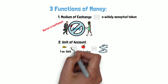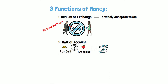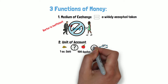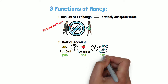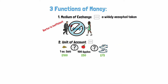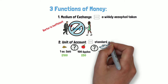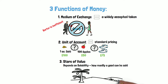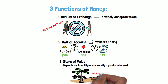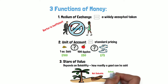If we relied on everyone bartering, one ounce of gold is 100 apples, and 100 apples is two pairs of shoes, and so on and so forth. It's unproductive and inefficient. We need a standard way to price things, so money has to be a unit of account. The third function of money is a store of value. Store of value depends on saleability, which is how readily a good can be sold. An old wooden boat in the middle of a desert is not very saleable. Water would be much more saleable in a desert because people need it.